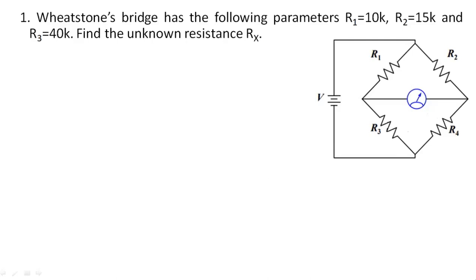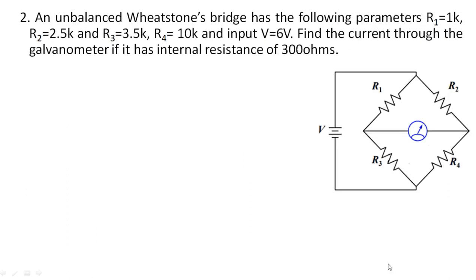I am going to explain two example problems on Wheatstone's bridge and one problem on the Kelvin bridge. Problems are very important when bridge concepts are considered because everything is in the analytical part. If you know the formula for the unknown value Rx in terms of the known values R1, R2, R3, then we can calculate the unknown value Rx, which is generally connected at the fourth arm.